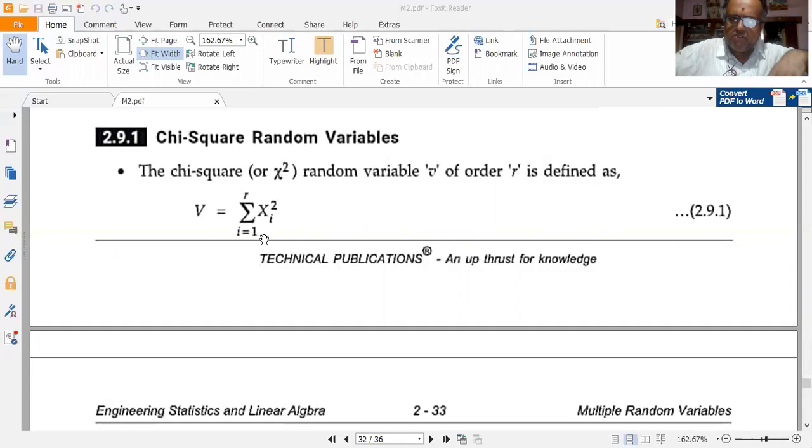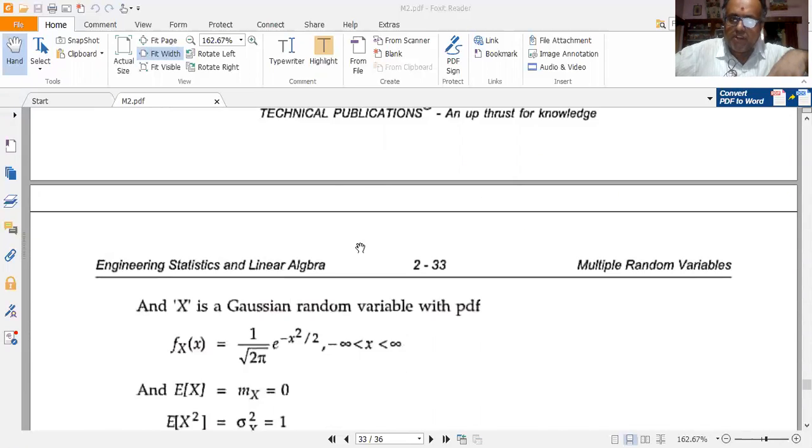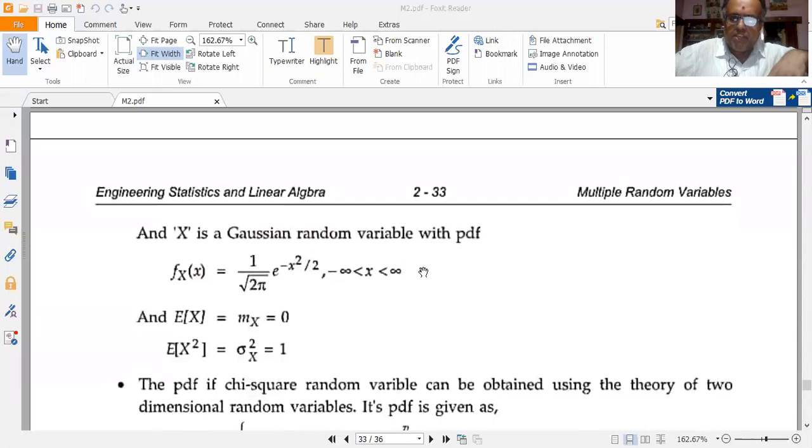V equals summation i equals 1 to r of x_i squared, and x is a Gaussian random variable with PDF given by f_x(x) equals 1 over square root of 2π times e to the power of minus x squared by 2 for minus infinity less than x less than infinity.